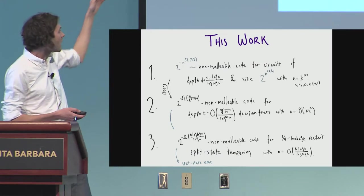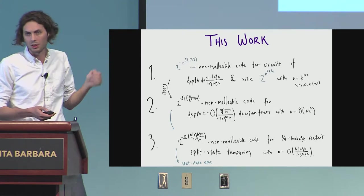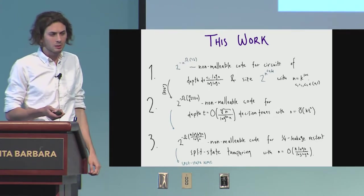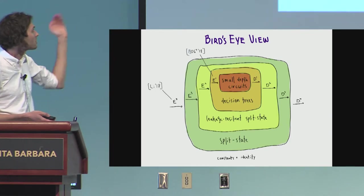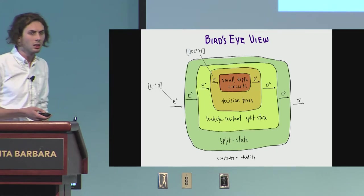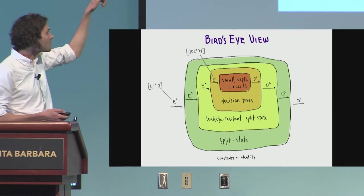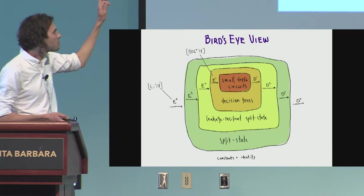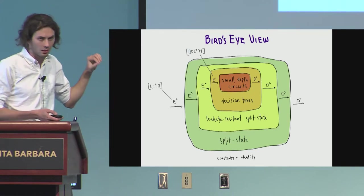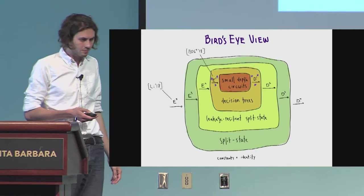And so that's what we're going to do. And so all of our results actually, the reason we have these intermediate results is they're going to follow, all of these results follow from such non-malleable reductions. A bird's eye view, what we're going to have is we're going to have this whole tower of reductions, non-malleable reductions from small depth circuits to decision trees to these leakage-resilient split-state or leaky split-state tampering functions to split-state, and then split-state non-malleable codes exist.